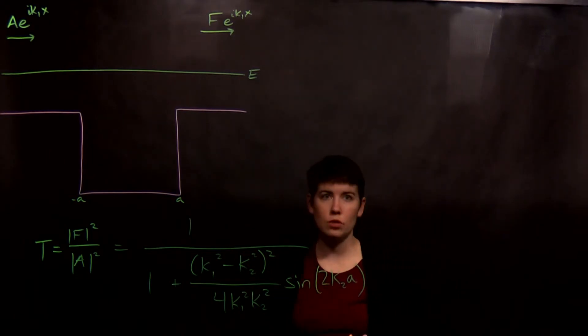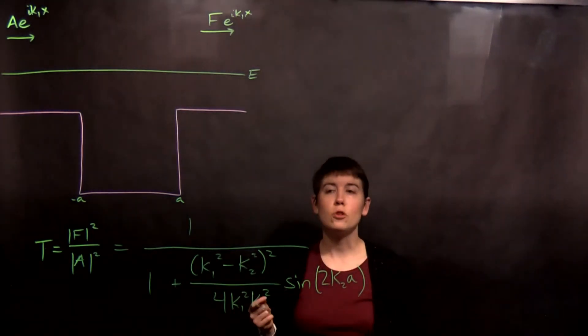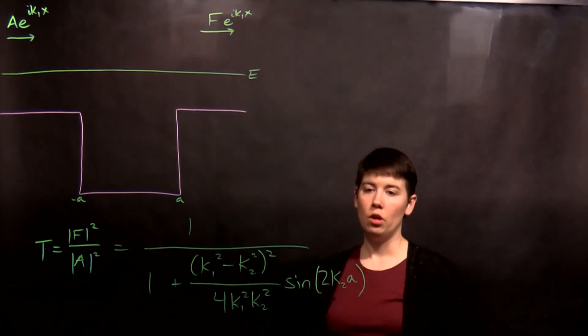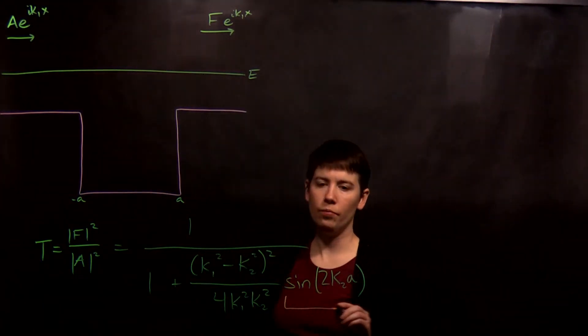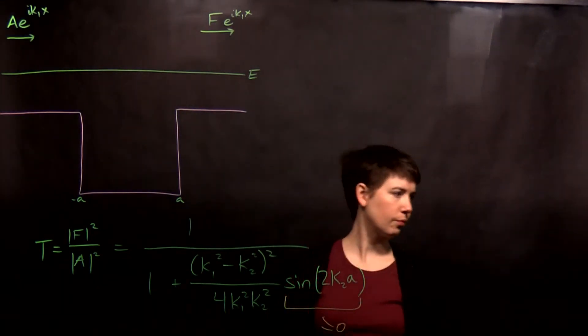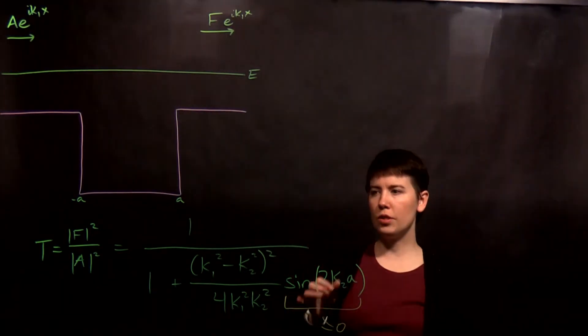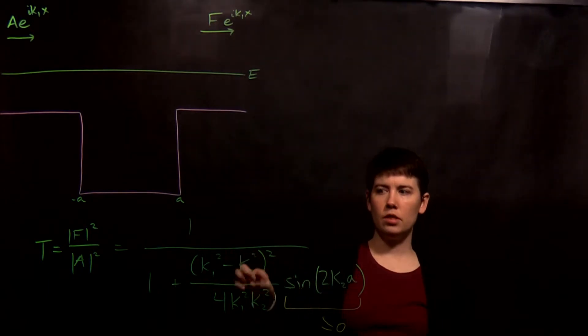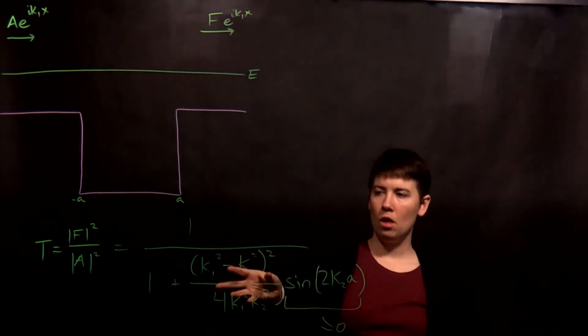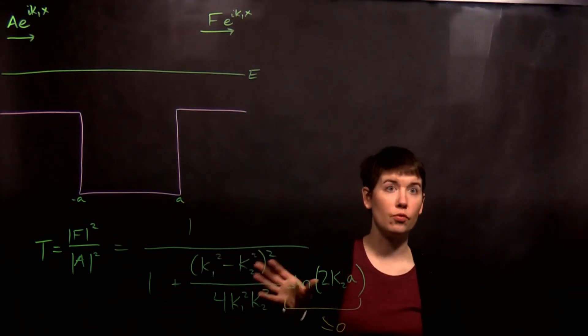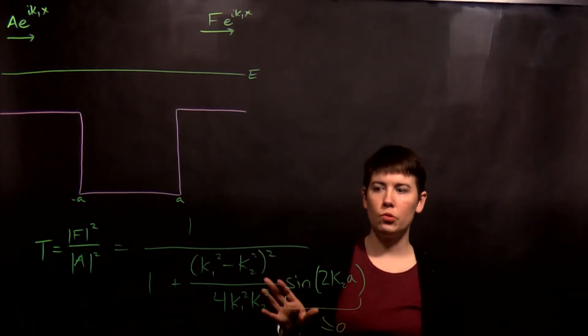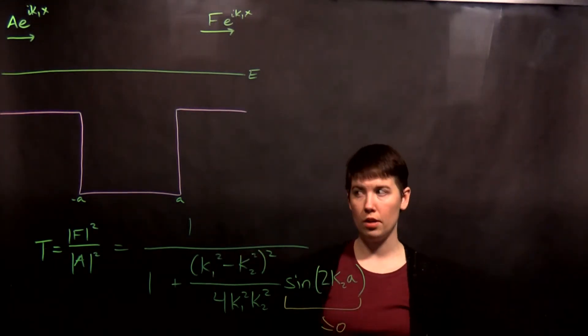Now there's something interesting to notice. Notice that for certain values of 2k2a, this term becomes zero. And if this term is zero, this doesn't matter what that is. And so then you get 1 over 1. The good news is it isn't that this is floating by itself, remember that. So it's okay that this term becomes zero because you then have 1 over 1.